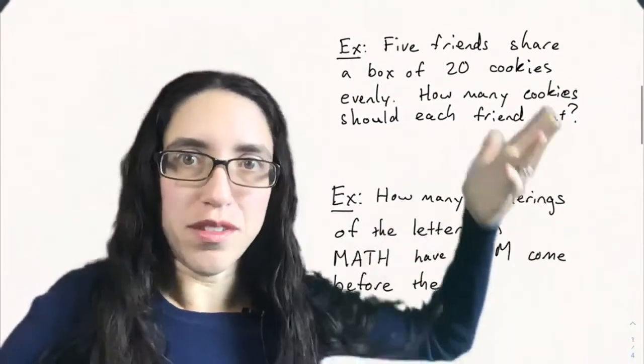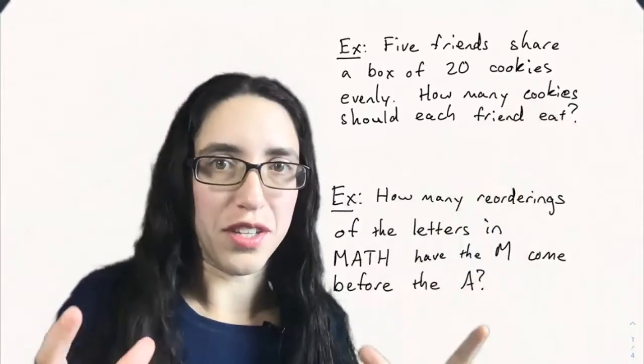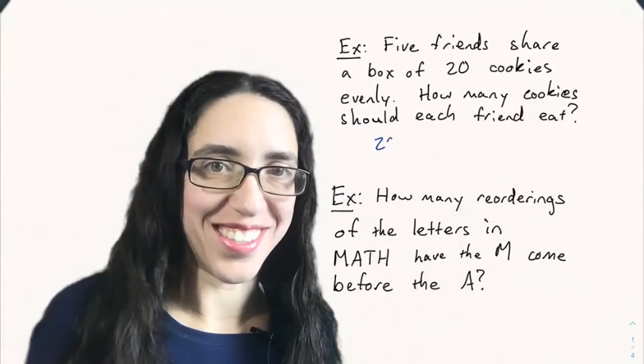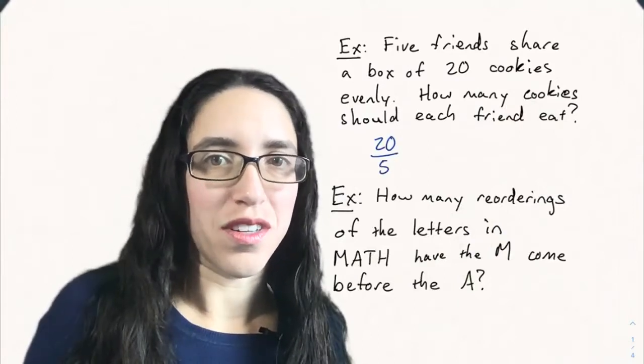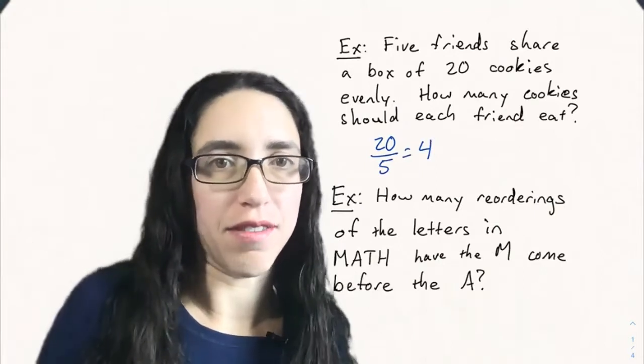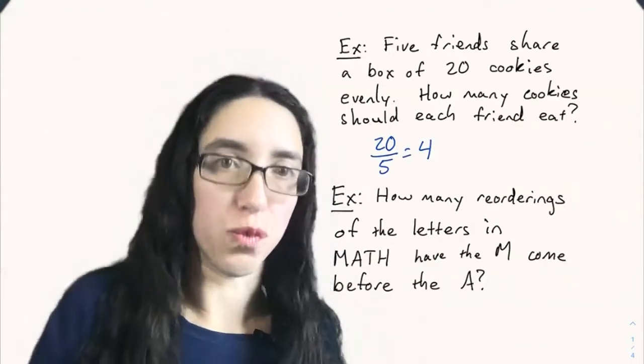Let's start with a very simple example. Say five friends share a box of 20 cookies evenly amongst themselves. How many cookies should each friend eat if they do this? So there's 20 cookies, five friends, you want to divide 20 by five and get four. Each person eats four cookies.